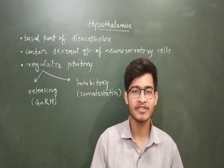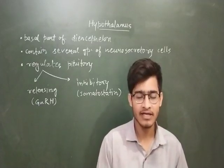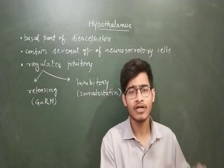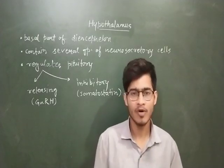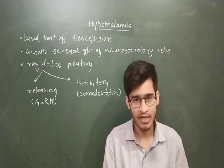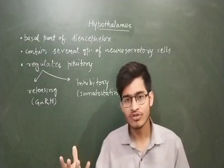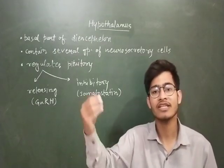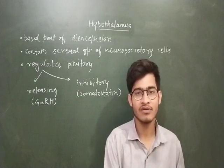Hello friends and welcome back to another video from Vipin Sharma Biology Tutorials. In this video we are going to talk about the very first endocrine gland, that is the hypothalamus. We have taken an overview of all the important endocrine glands and some of the hormones synthesized and secreted by those endocrine glands in our body in the last lecture. Hypothalamus is present in the brain and it can secrete stimulatory hormones such as GnRH which will stimulate the pituitary, and some inhibitory hormones which can inhibit the action of some other gland.